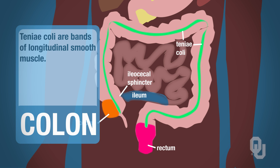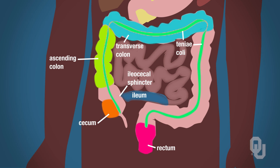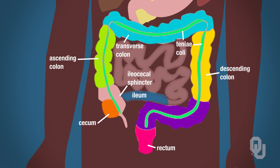There are four sections to the colon. The very first part is called the ascending colon. Then contents move to the transverse colon, then to the descending colon, and the last part is the sigmoid colon — an S-shaped portion that kind of looks like an S.